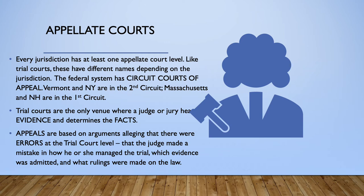Remember that trial courts are the only venue where a judge or jury hears evidence and determines the facts. Appeals are based on arguments alleging that there were errors at the trial court level — that the judge made a mistake in how he or she managed the trial, which evidence was admitted, and what rulings were made on questions of law.